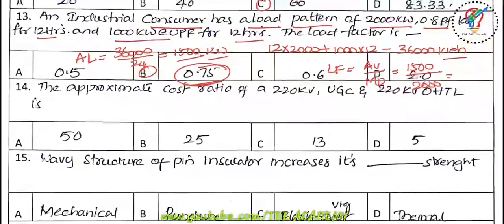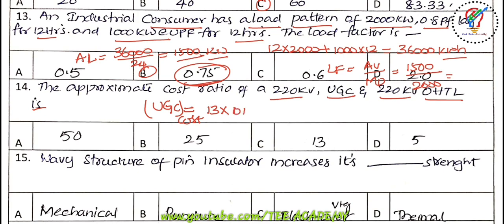Fourteenth question: the approximate cost ratio of a 220 kV underground cable (UGC) to a 220 kV overhead transmission line. The cost of underground cable is 13 to 15 times the cost of the overhead transmission line — i.e., if you spend 1 rupee on overhead line, you spend about 13 rupees on underground cable for the same voltage rating. The answer is option C.